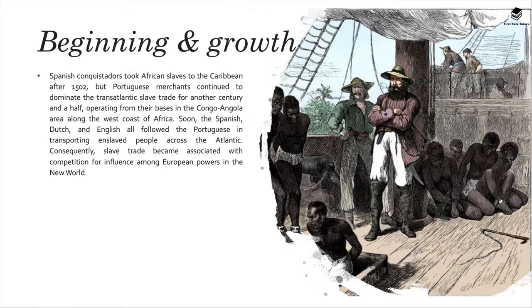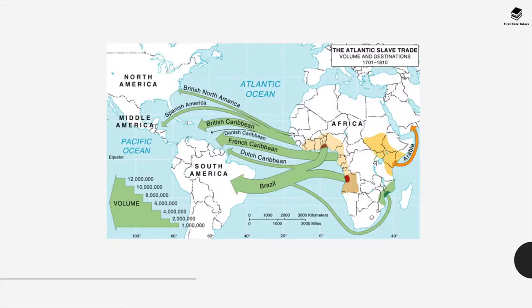Spanish conquistadors took African slaves to the Caribbean after 1502, but Portuguese merchants continued to dominate the transatlantic slave trade for another century and a half, operating from bases in the Congo-Angola area. Soon the Spanish, Dutch and English all followed the Portuguese in transporting enslaved people across the Atlantic, and the slave trade became associated with competition for influence among European powers in the new world. The bulk of slaves went to Brazil and the French Caribbean, though North America and the British and Dutch Caribbean also received significant numbers. Most slaves came from western and southern Africa, including the Angola region, while eastern Africa also supplied slaves to the Arabian islands.